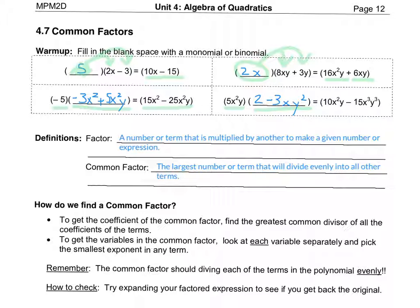A couple of definitions: we want to define what 'factor' means. Back in previous years you may have talked about the factoring tree for particular numbers. For example, if you had the number 12, you may have broken it into 3 times 4. 3 and 4 are factors of 12 because they multiply together to get 12. For prime factorization, 12 equals 3 times 2 times 2, since 4 breaks down to 2 times 2.